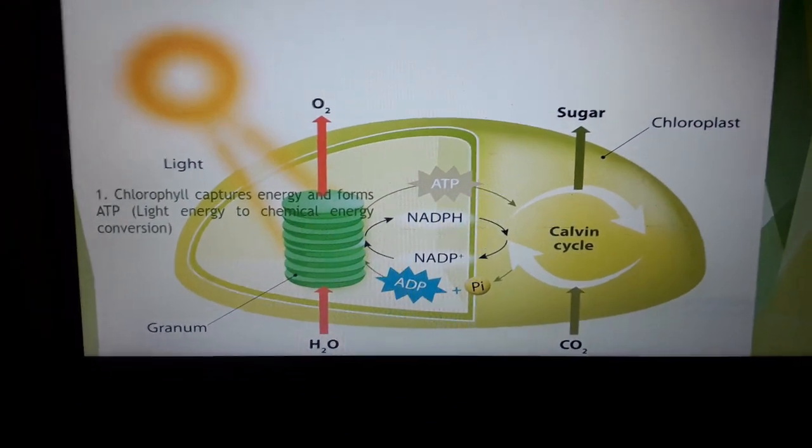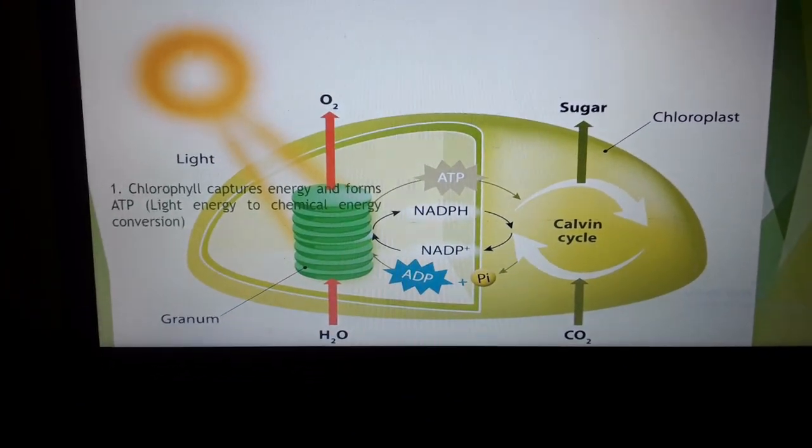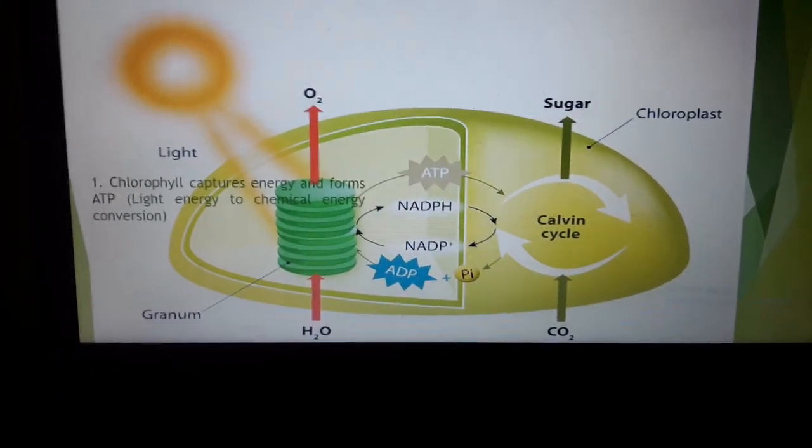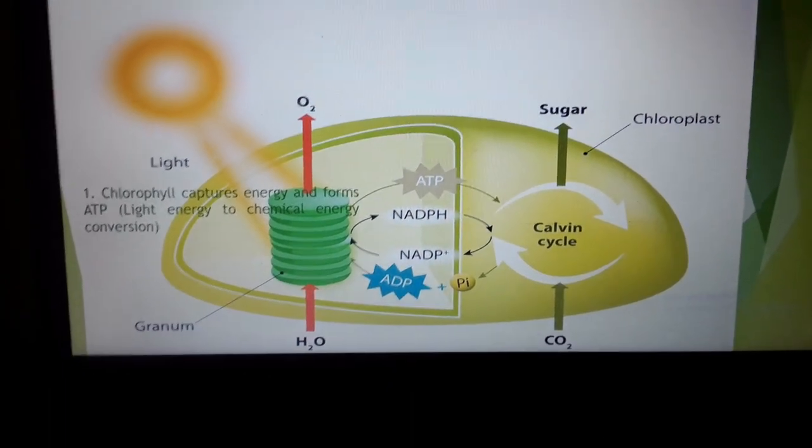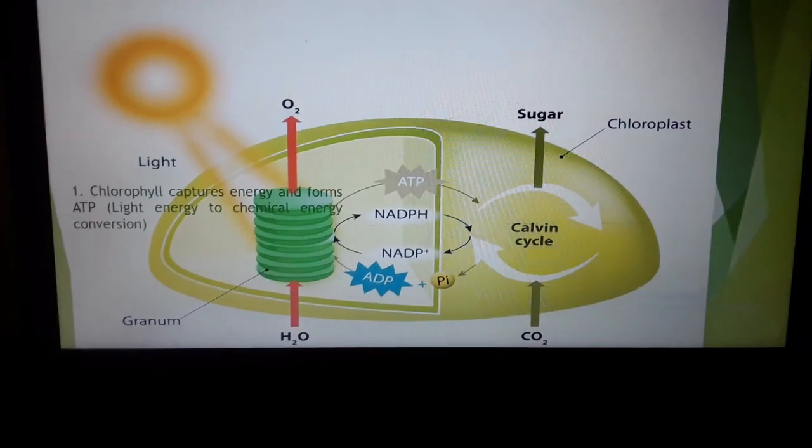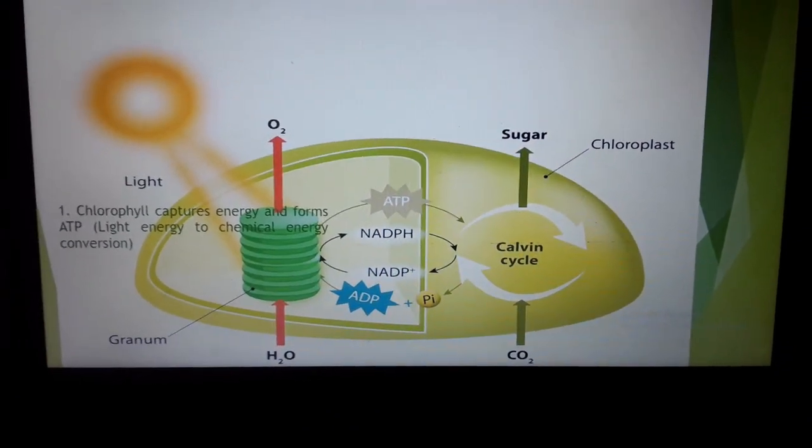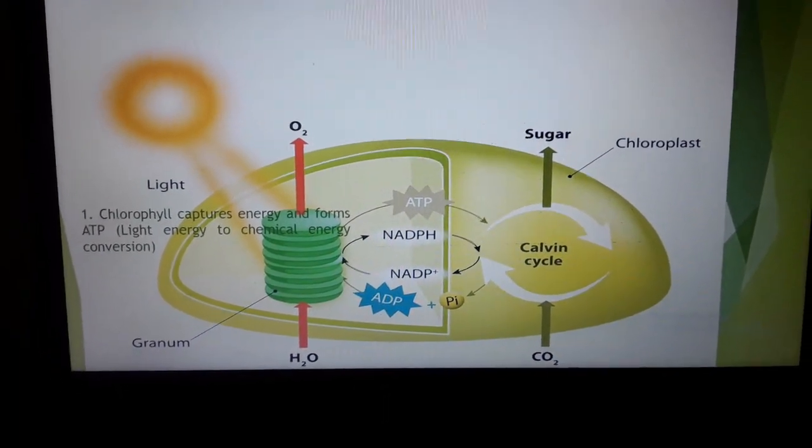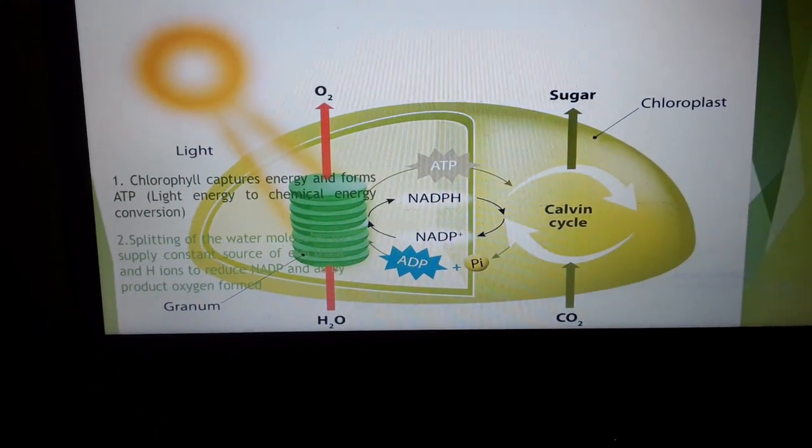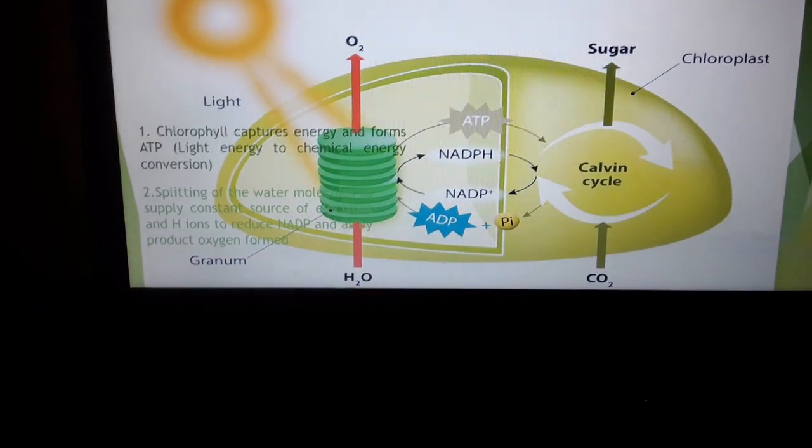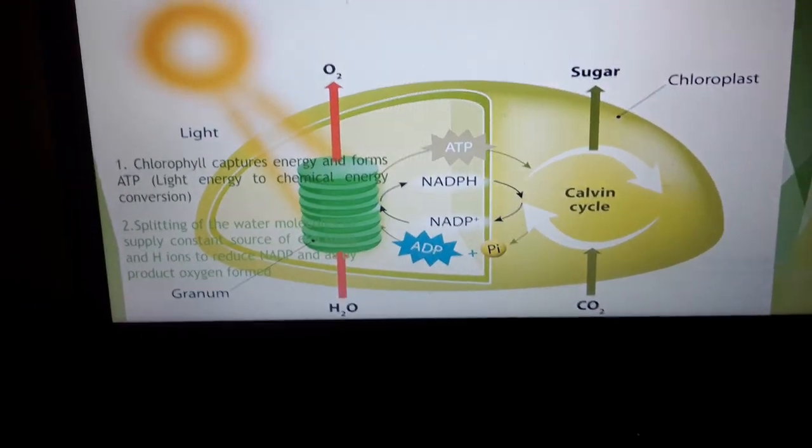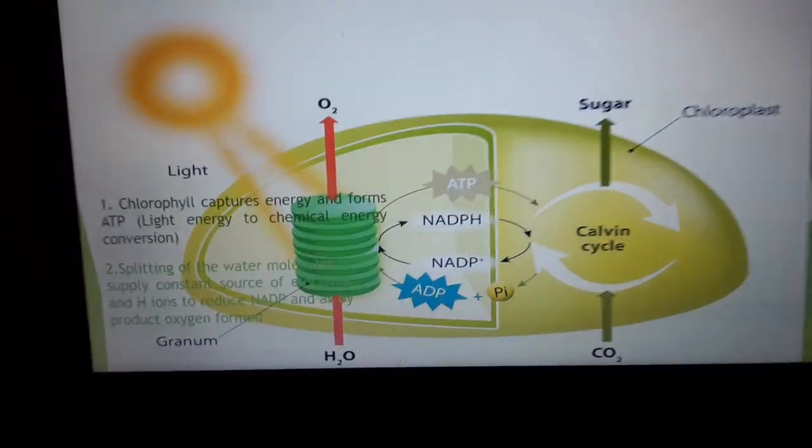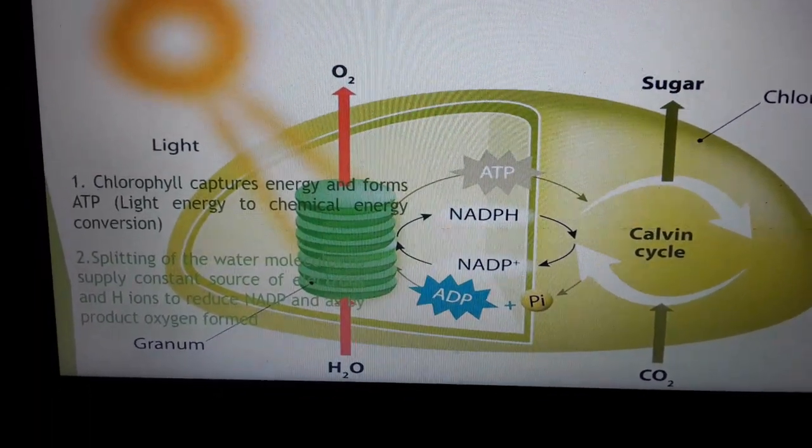Secondly, as a source of electron within the cell, you are now focusing within the cell, there will be the water. Water is splitted in H plus and H minus ion and they will release the electrons. So, as a result, here form as a by-product from the water oxygen released. The second point. Splitting the water molecules, supply constant source of electrons and H ions, it will reduce the NADP and the by-product oxygen formed.